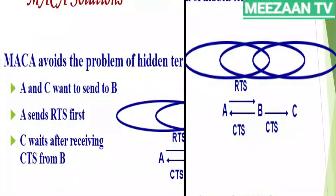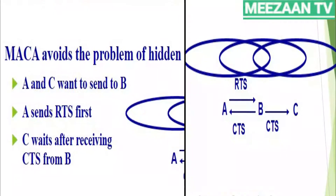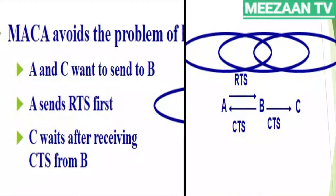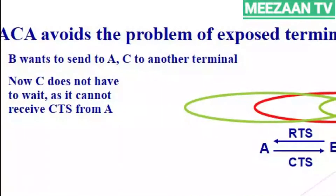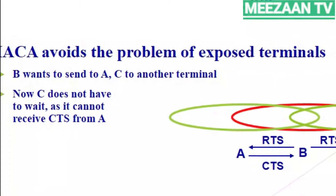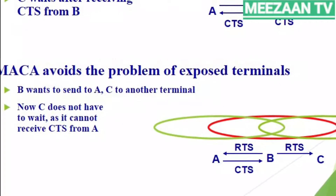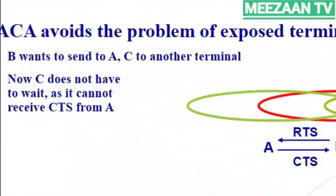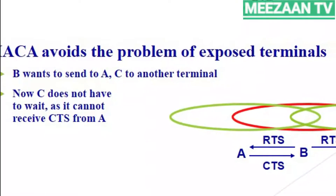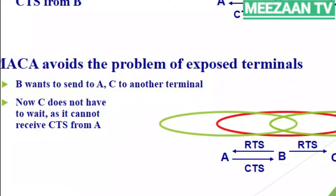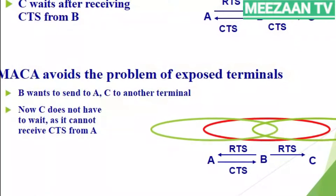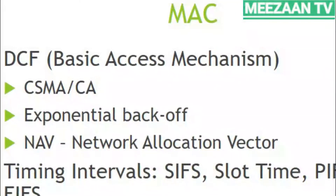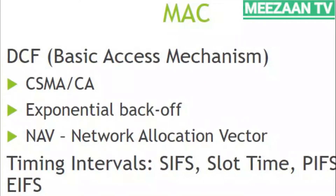With MACA, for the hidden node problem: A sends an RTS, B responds with a CTS containing the communication duration. C receives the CTS and aborts its transmission to B, thus avoiding the collision. For the exposed node problem: B sends an RTS to A, which C receives. Since C does not receive the CTS from A, C waits for a minimum threshold, determines A is outside its radio range, and starts communicating with D without interference.